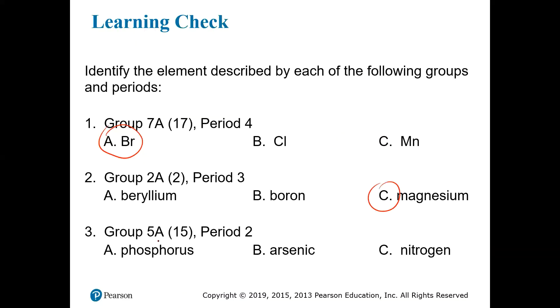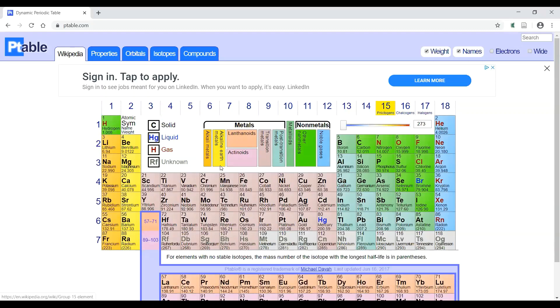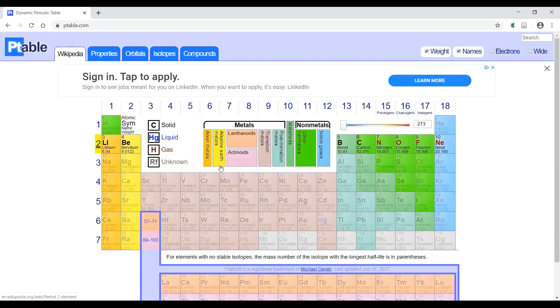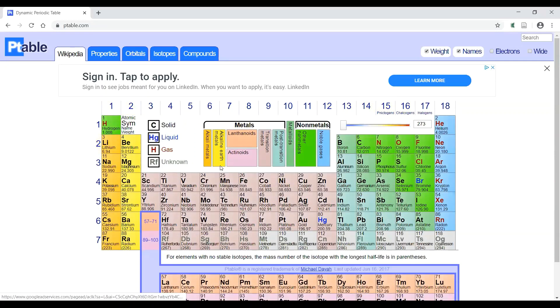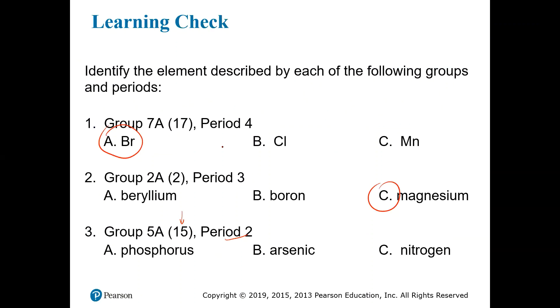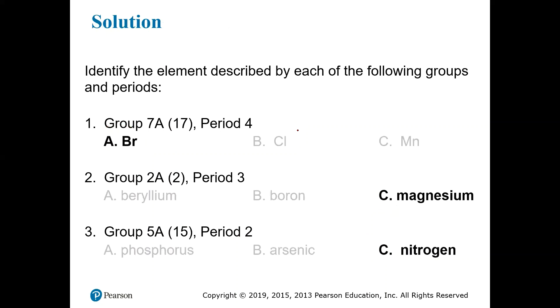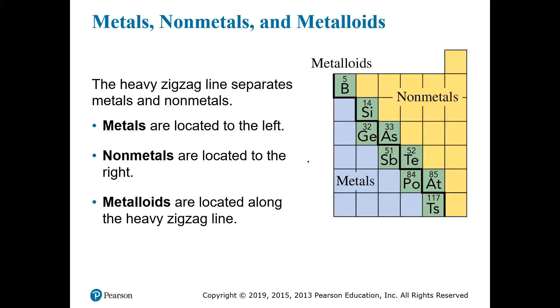Last but not least, group 5A or in the new system 15. These questions actually give you the new group number as well. Just be careful about that. So group 15 period 2 is going to be, group 15 is here, period 2 is here. Remember, even though it's the first one in that column, it's technically in period 2. So group 15 period 2 is going to be nitrogen.